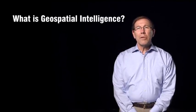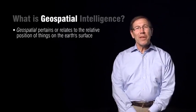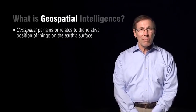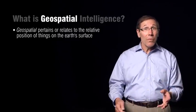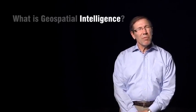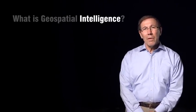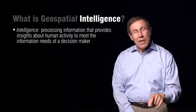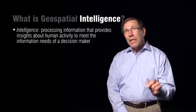Let's begin by examining the individual terms geospatial and intelligence. Geospatial pertains to things on the surface of the Earth, and particularly it looks at the relative position of those things — everything is located on Earth someplace, and there are things around it. Intelligence, we're not talking about smarts here. We're talking about processing information that provides insights about human activity — key word: human activity — that serves the information needs of a decision maker.